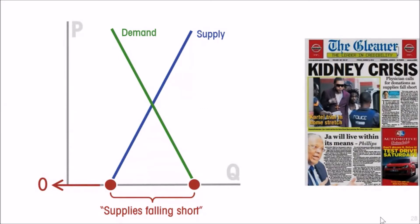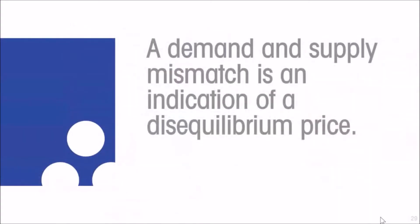This is not an argument in favor of allowing markets to determine who gets organs — let us be very clear on that. But what it does tell us is that whenever we see evidence of a demand and supply mismatch, it is an indication that we are at a disequilibrium price — a price that does not clear the market. When you see shortages or long lines, it is telling you something about price.